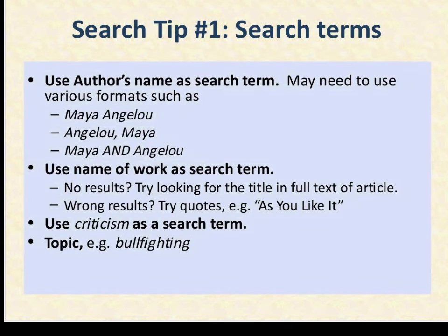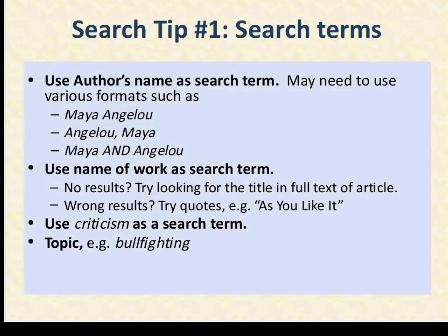The first thing we'll talk about are search terms. You never want to enter your whole thesis into any of these search boxes, because that will throw off the database — it's much more accurate to limit yourself to a few search terms. Some things to think about: use the author's name as a search term. You can use various formats — Maya Angelou, or Angelou Maya in different word order, or Maya and Angelou. Some databases are picky, so if you're not getting results, vary the way you're searching the author's name.